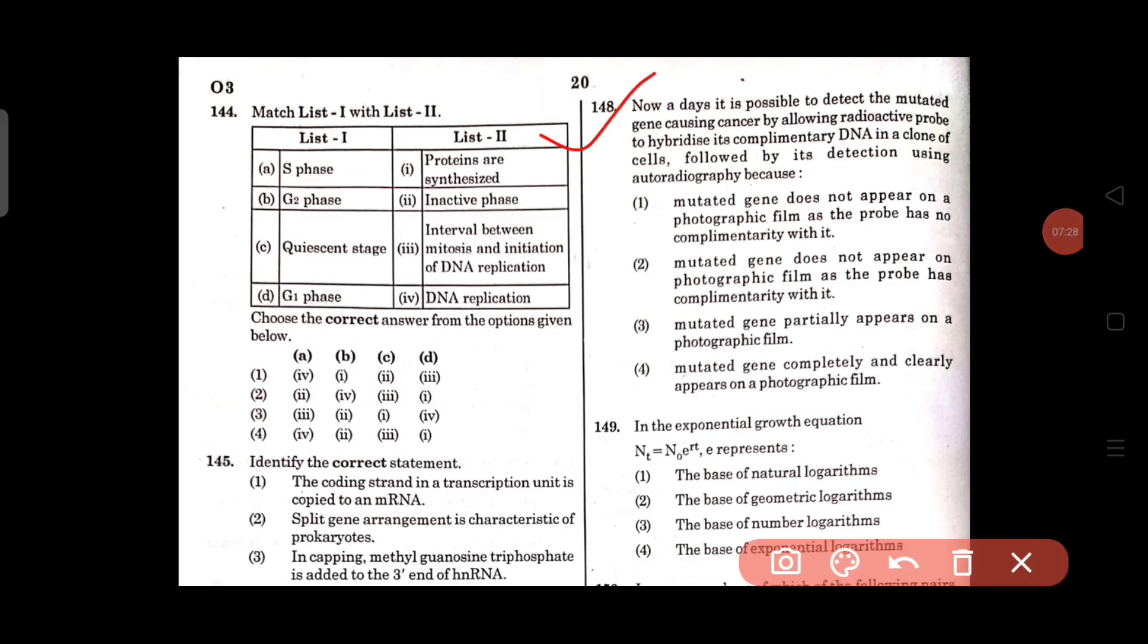Question number 148: It is possible to detect the mutated gene causing cancer by allowing radioactive probe to hybridize its complementary DNA in a clone of cells followed by its detection using autoradiography because mutated gene does not appear on a photographic film as the probe has no complementarity with it. This one is correct. For 148, option 2 is the correct answer.